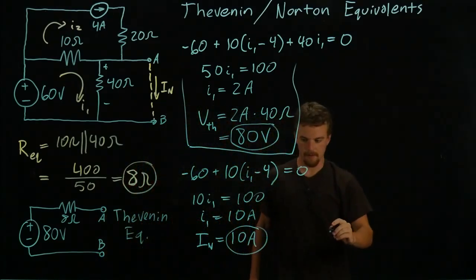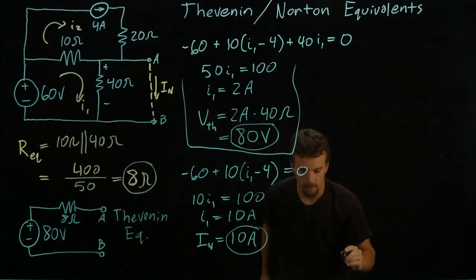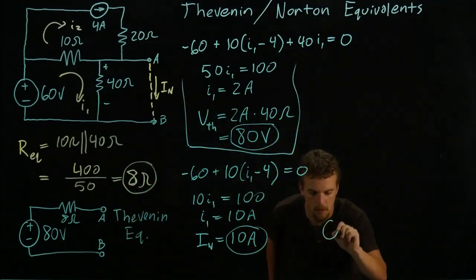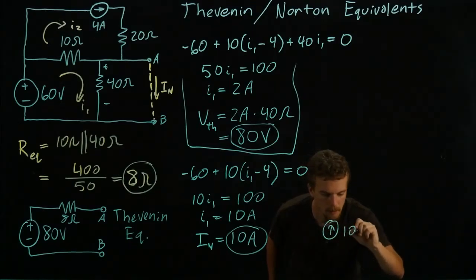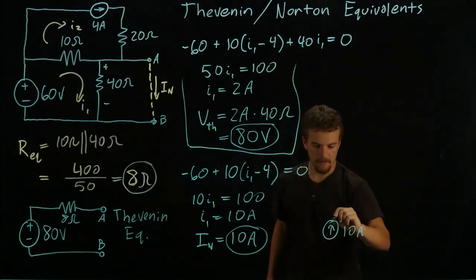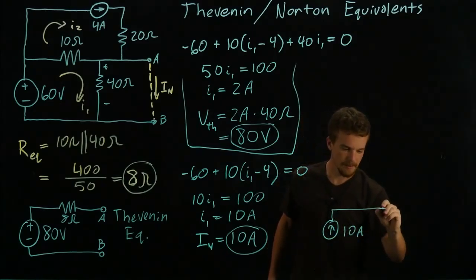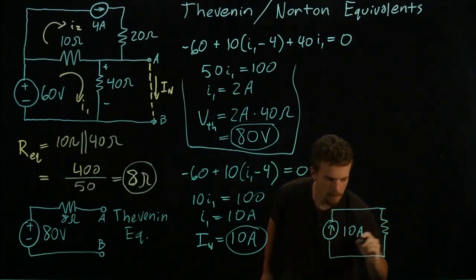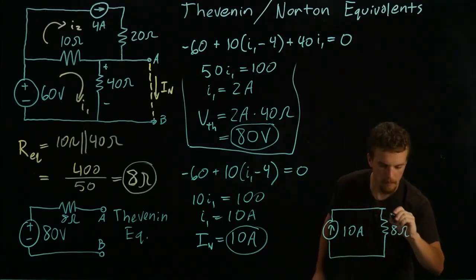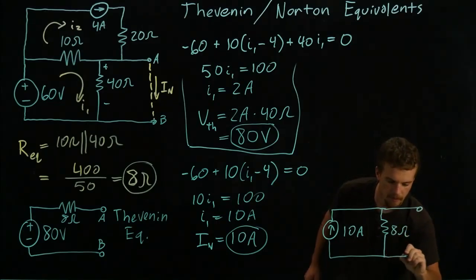Here, let's label this one. This is our Thevenin equivalent. We'll draw our Norton equivalent over here. So we'll have a 10 amp source, and this is going to be in parallel with our same resistance, 8 ohms, and the points A and B are maintained.